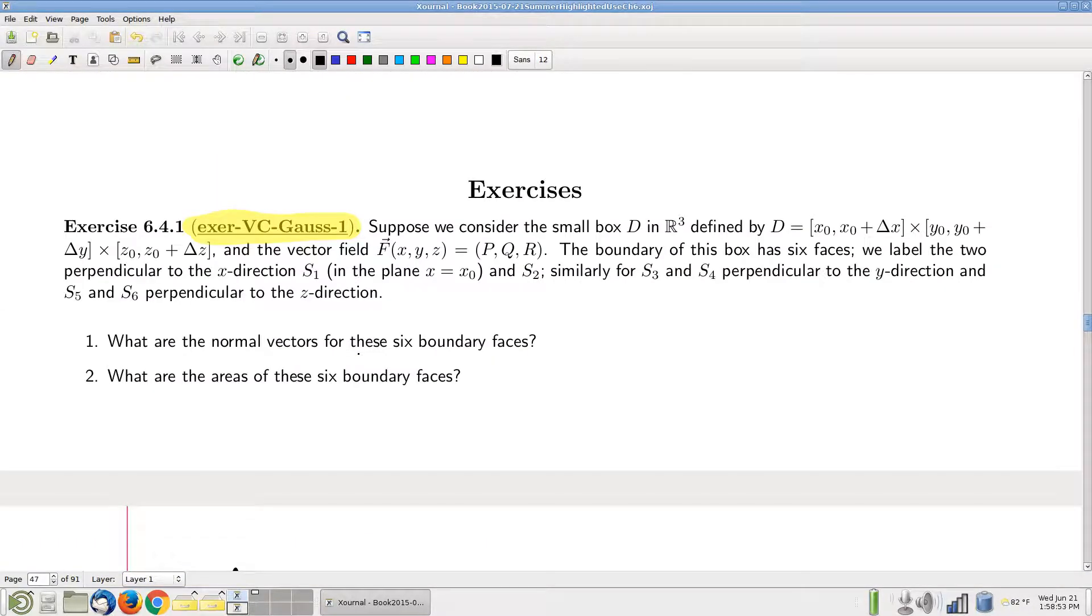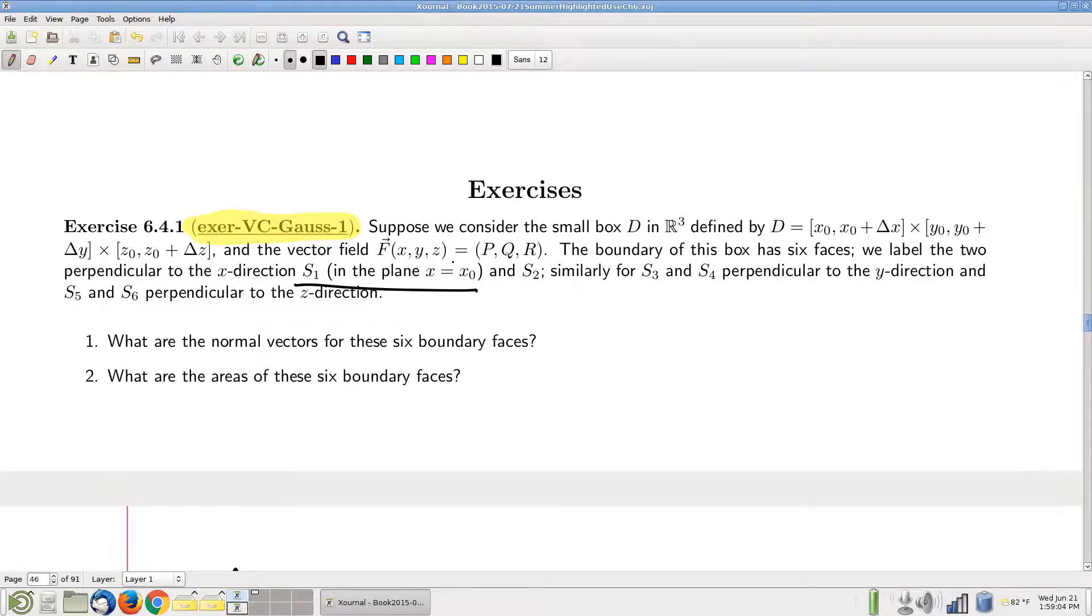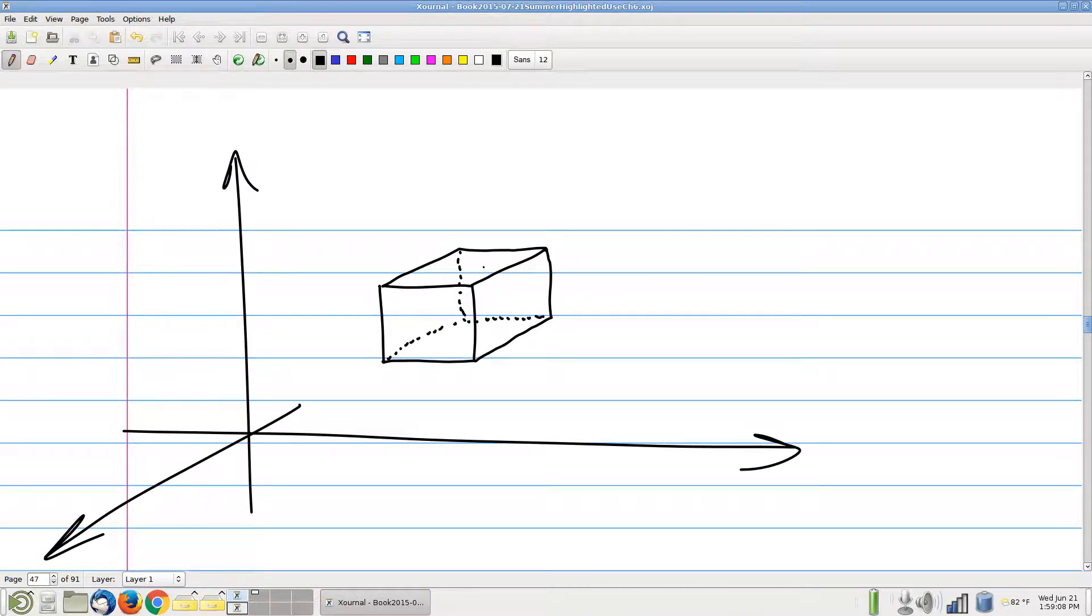Now the naming convention we made was that S1 and S2 are the ones perpendicular to the x direction. Specifically, S1 being the one where x is x naught, so that means that back here, in this back face, that back face is S1. And then this front face here is S2. And then likewise for the other directions, so that means that this face back, that's S3, and then that's S4. And then likewise, S5 is underneath here, and S6 is this one up on top. Okay, everybody good?